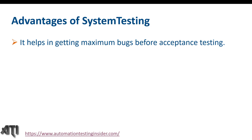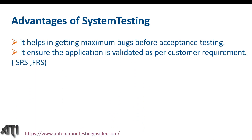The advantages of system testing: it helps in getting maximum bugs before acceptance testing, because we perform both functional and non-functional testing, catching defects in both areas. It ensures the application is validated as per customer requirements — the Software Requirement Specification (SRS) and Functional Requirement Specification (FRS) — since we write system test cases based on SRS and FRS.